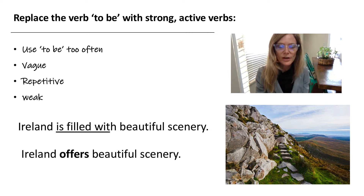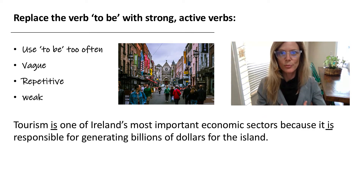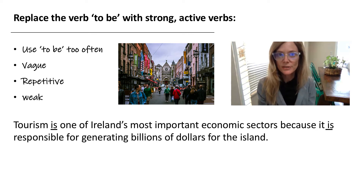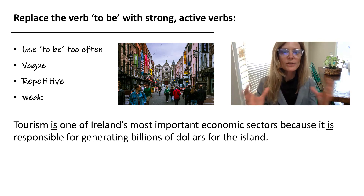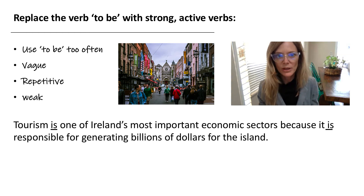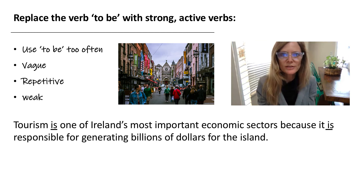We're reducing the wordiness of our sentence and making it very clear and effective. Lastly, let's take a look at a sentence that's a little more academic, that you might use in your academic writing. This sentence is a little bit longer than the first two examples. 'Tourism is one of Ireland's most important economic sectors because it is responsible for generating billions of dollars for the island.' That's a great sentence — it's very specific and complex — but both of the verbs in those clauses are the verb 'to be.' It's a little repetitive and it's not as strong as it could be.